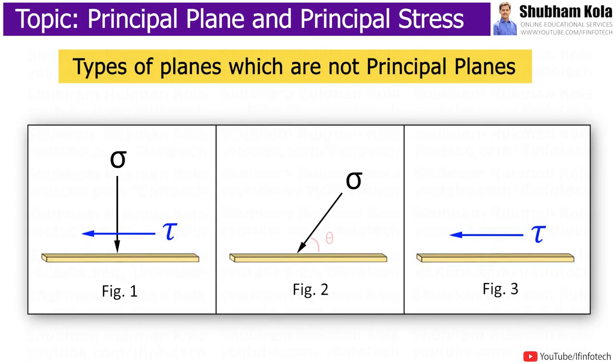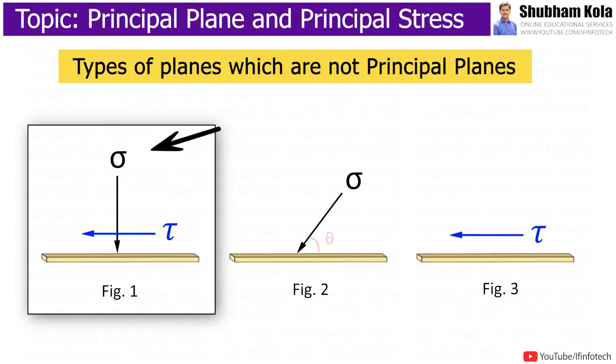Now, there are some types of planes shown in figure which are not principal planes. In first type of plane having normal stress, but the planes also have shear stress. So, this type of plane is not principal plane. Because on the principal plane, the shear stress value is zero.